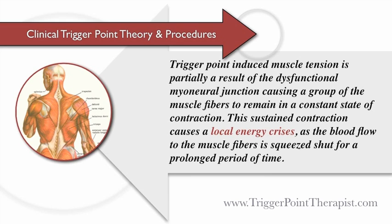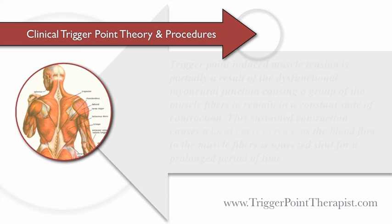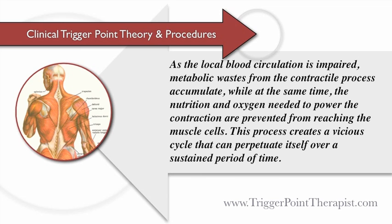This sustained contraction causes a local energy crisis as the blood flow to the muscle fibers is squeezed shut for a prolonged period of time. As the local blood circulation is impaired, metabolic waste from the contractile process accumulates, while at the same time the nutrition and oxygen needed to power the contraction are prevented from reaching the muscle cells. This process creates a vicious cycle that can perpetuate itself over a sustained period of time.